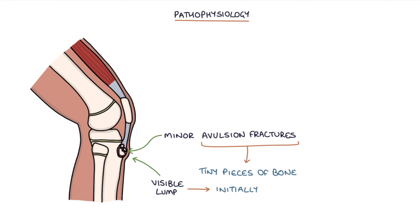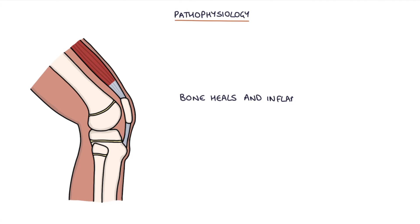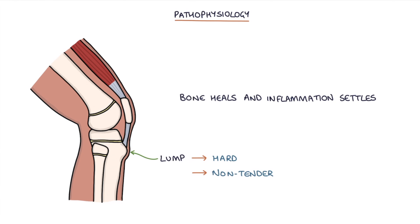Initially, this lump is tender due to active inflammation in the area. As the bone heals and the inflammation settles, the lump becomes hard and non-tender. A hard, non-tender lump is then permanently present at the tibial tuberosity.